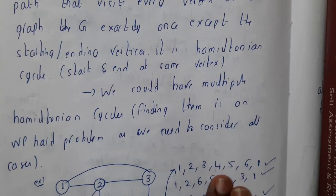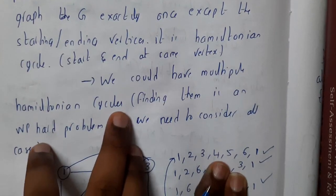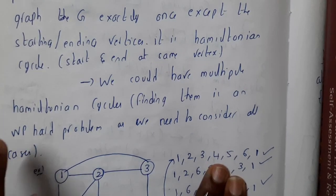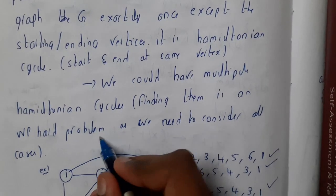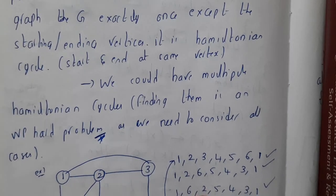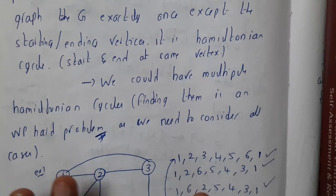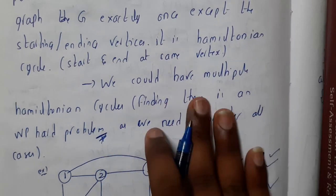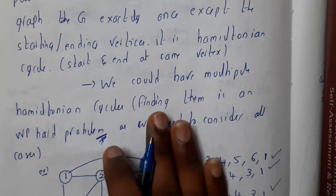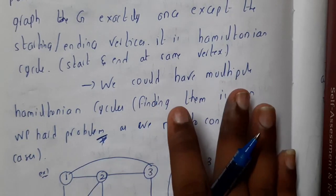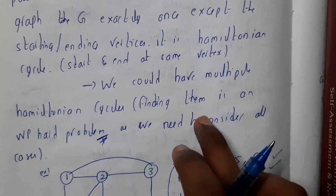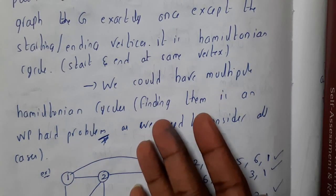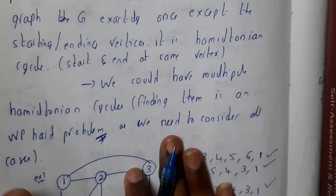We could have multiple Hamiltonian cycles, and finding them is an NP hard problem. We'll be discussing about NP hard problems in our next unit in detail, so don't worry. In these situations, you are not depending on cost or anything — the only goal is to find the path. Even if you find one or two paths it will be enough, and if you want to find all paths, you will be solving almost all cases.